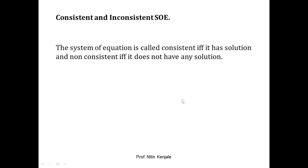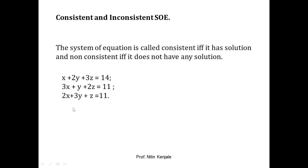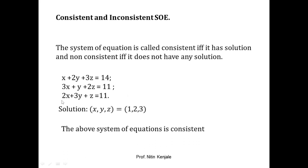Now we see two phrases: consistent and inconsistent system of equations. We say the system of equations is consistent if and only if it has a solution, whereas if it does not have a solution we call it inconsistent. For example, this system has a solution (1, 2, 3), so this system of equations is consistent.